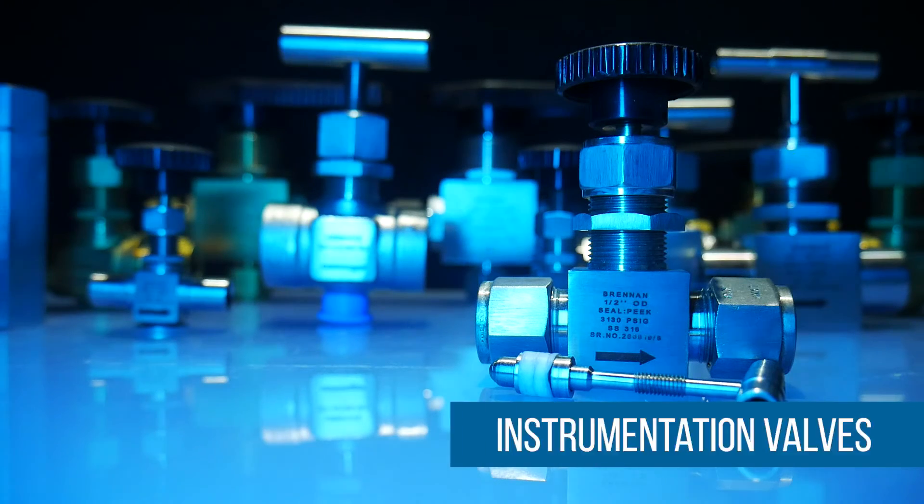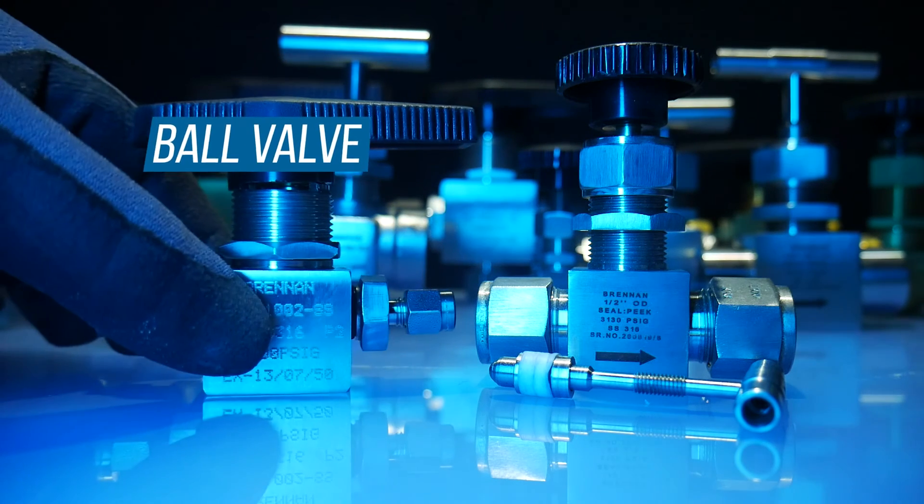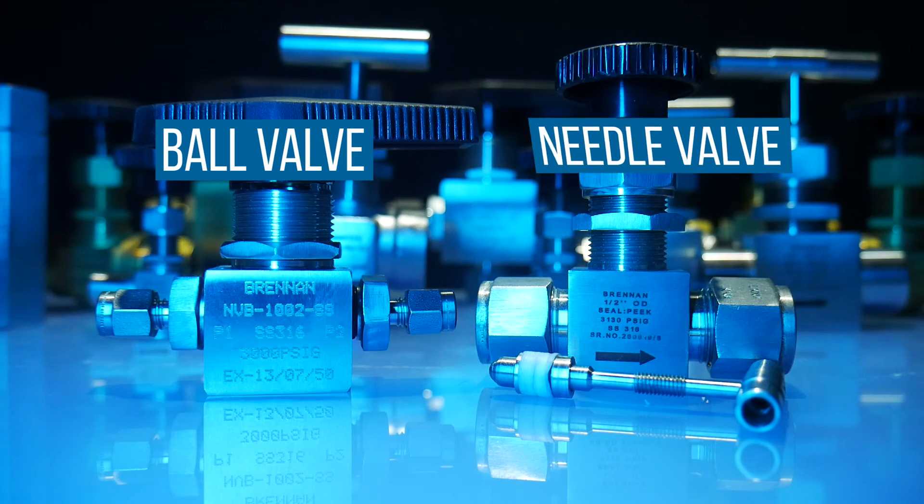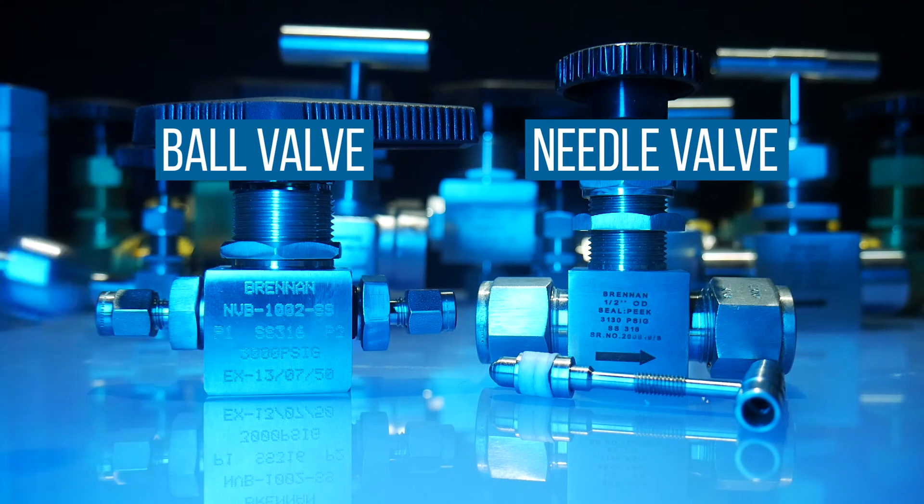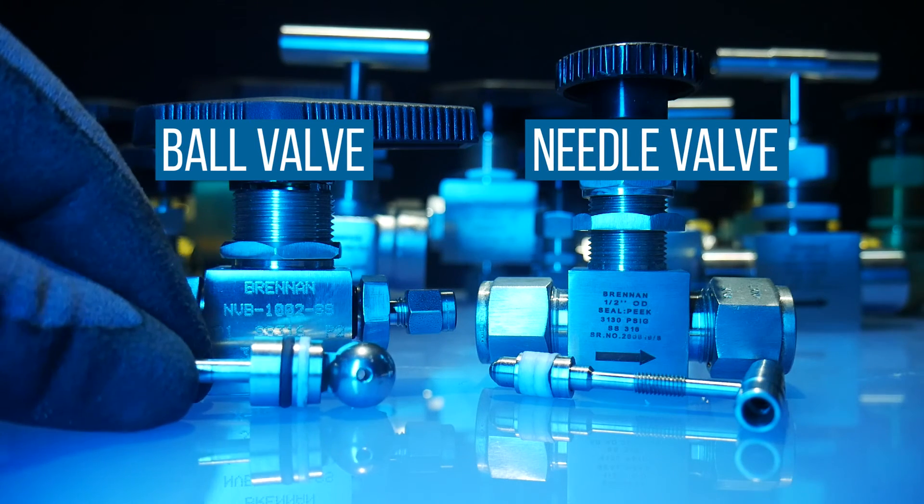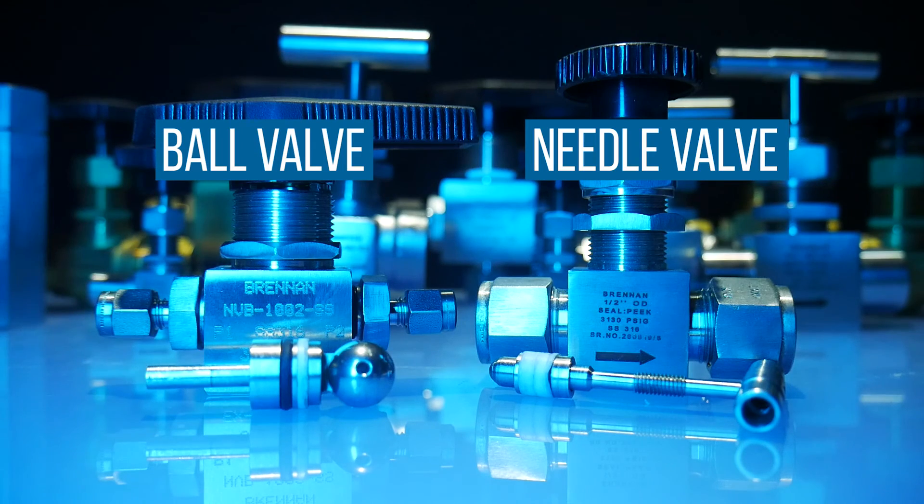There are many similar varieties of instrumentation valves. One example, the instrumentation ball valve is similar in many aspects to an instrumentation needle valve, but uses a ball-shaped component containing a port through its center to stop or start fluid flow.